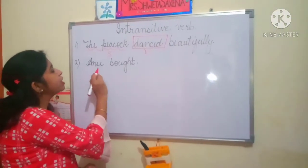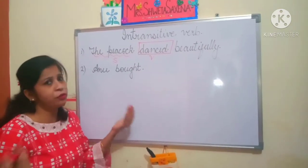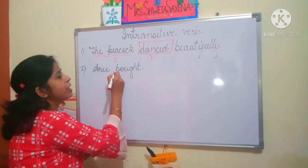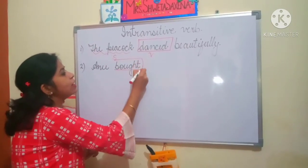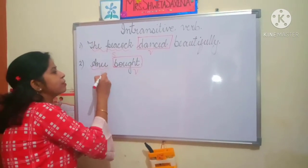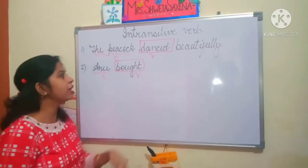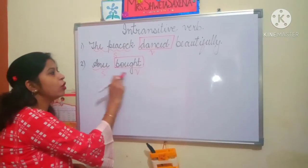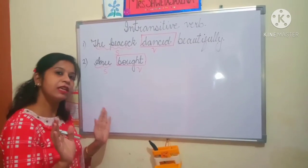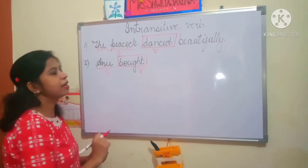Second example: Anu bought. It is not an incomplete sentence — Anu ne kuch cheezen khareedi. Bot is the verb here. And who bought? Anu — so Anu is the subject. But do you find any object here? No object in the given sentence. So the verb having only subject but no object — and the sentence is complete, not incomplete — is intransitive verb.